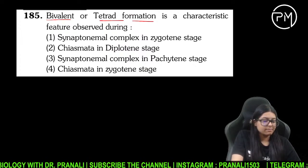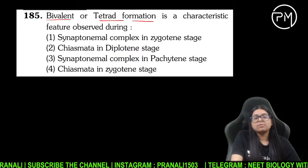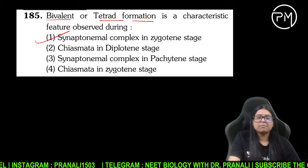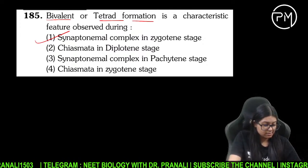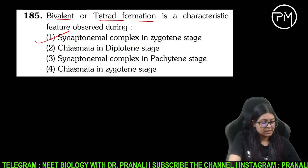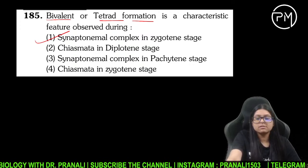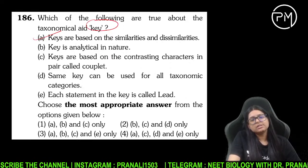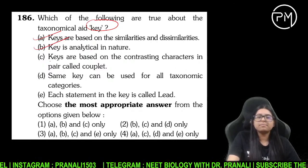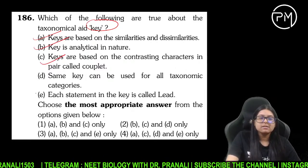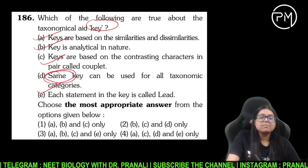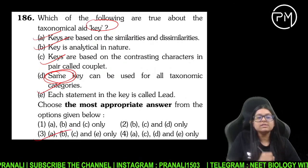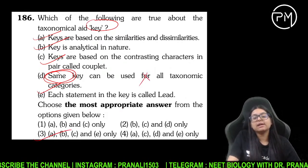Bivalent or tetrad formation kismein dikhega? Yeh dikhhta hai synaptonemal complex jab banta hai — kahan par? Zygotene stage mein. Dikhotomous key ki similarity-dissimilarities par based hai — analytical nature hai. Pair of contrasting character ko couplet bolte hain. Same key kar lo kya sabhi taxonomic category ke liye? Nahi, alag-alag category ke liye alag-alag honi chahiye — D wala wrong hai.